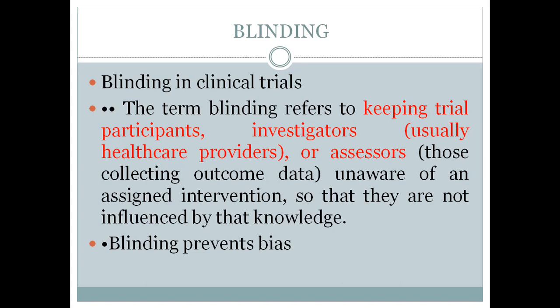Welcome back to the classes on epidemiology. Today we are covering blinding — what it is and how blinding helps to prevent biases. In the last class, we saw various types of biases seen in case-control and cohort studies. Biases are very rarely seen in experimental studies because in experimental studies we keep both groups of participants randomly allocated, so the groups themselves are comparable and selection bias is completely removed from the study design.